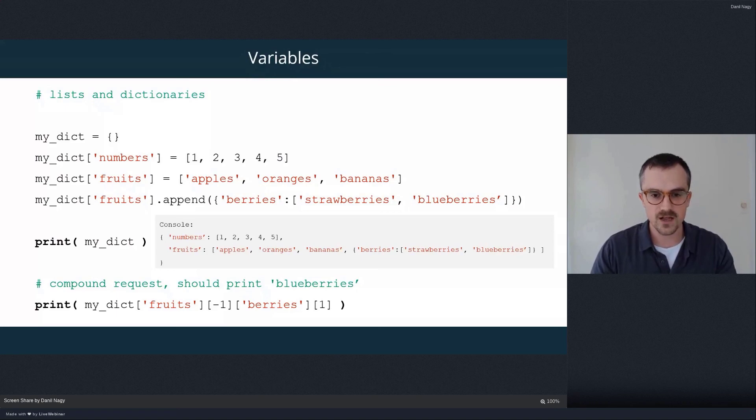Now, when we have this element, you see it's a dictionary. So we're pulling the berries key, which is another list. And now we're taking the second element. So one means the second element from that list. So after drilling down these four stages, what should be returned by this print statement is actually blueberries. And you can try this on your own.